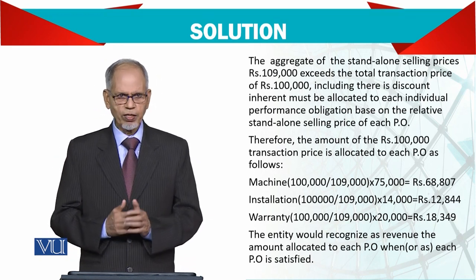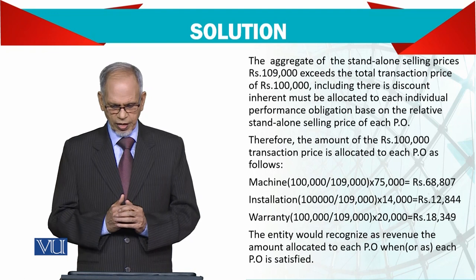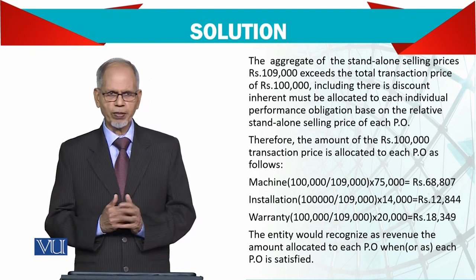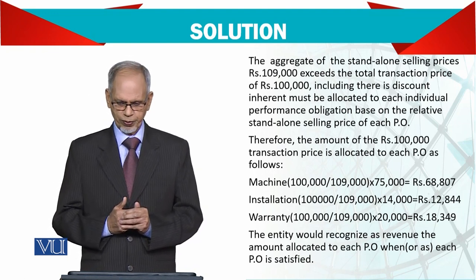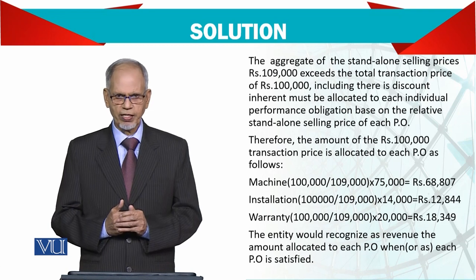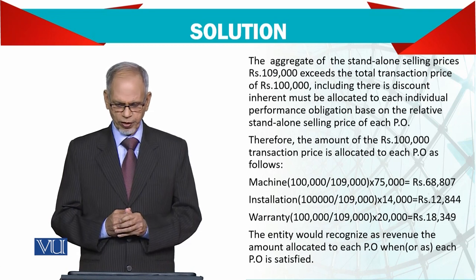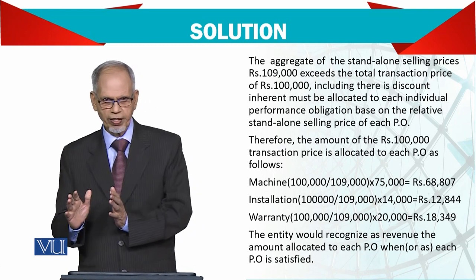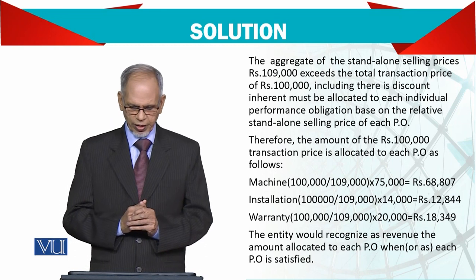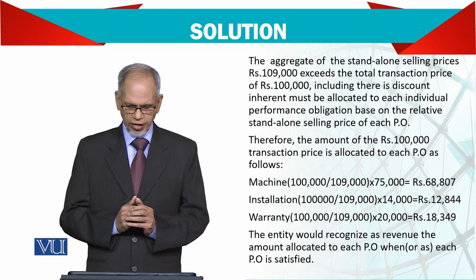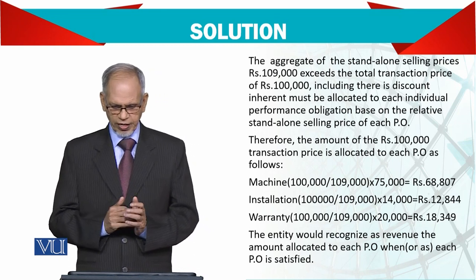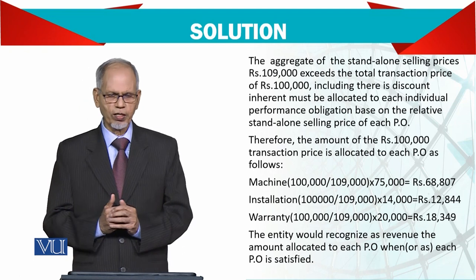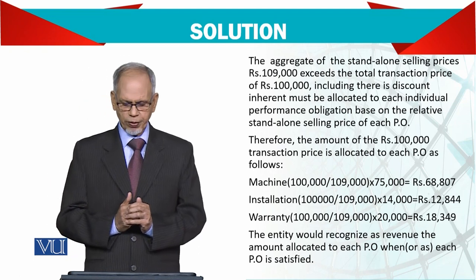The total of £100,000 divided by £109,000, multiplied by the machine's stand-alone price, gives £68,807 allocated to the machine delivery — so that is the revenue you can recognize when the machine is delivered. For installation, £14,000 divided proportionally gives £12,844, which you recognize as revenue once the machine is installed.